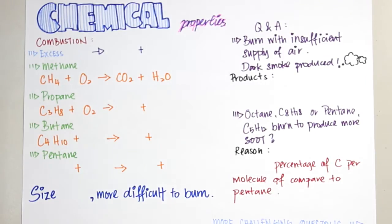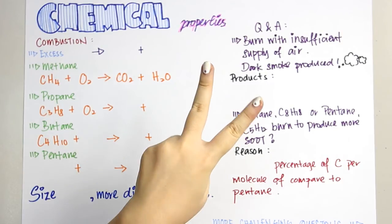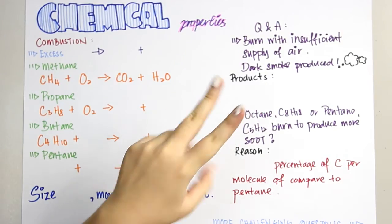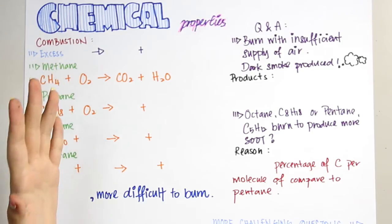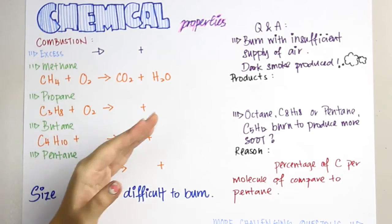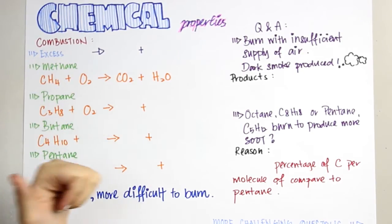For this episode of chemistry of alkane compounds, we will discuss chemical properties. There are two kinds of main chemical properties: combustion and substitution.